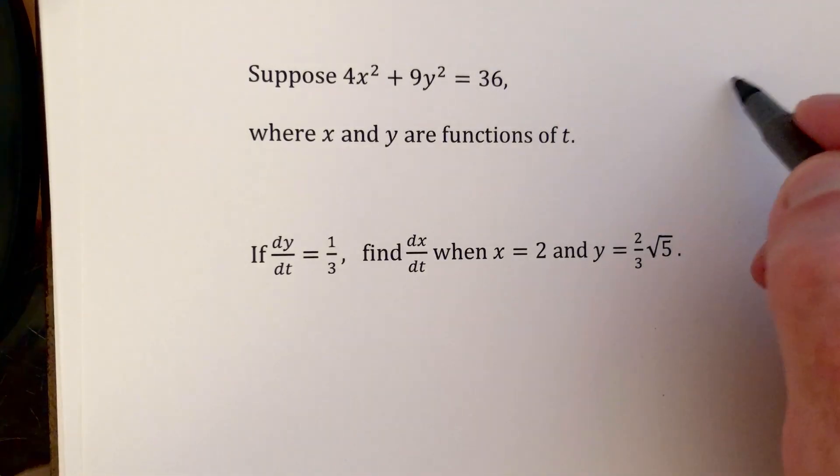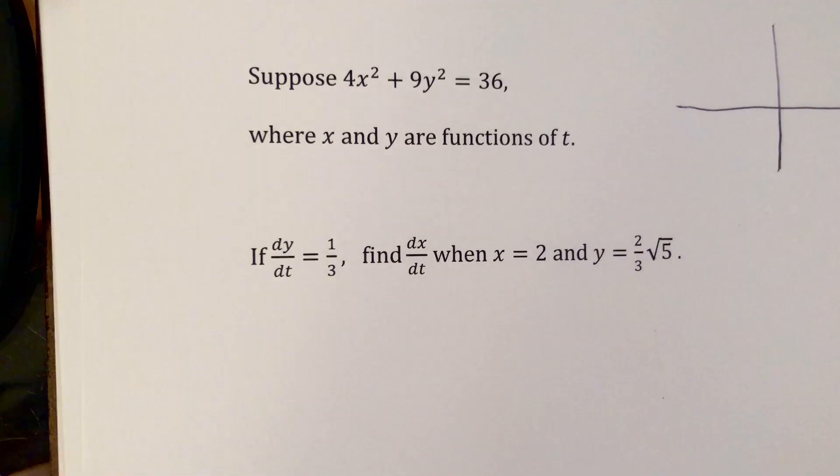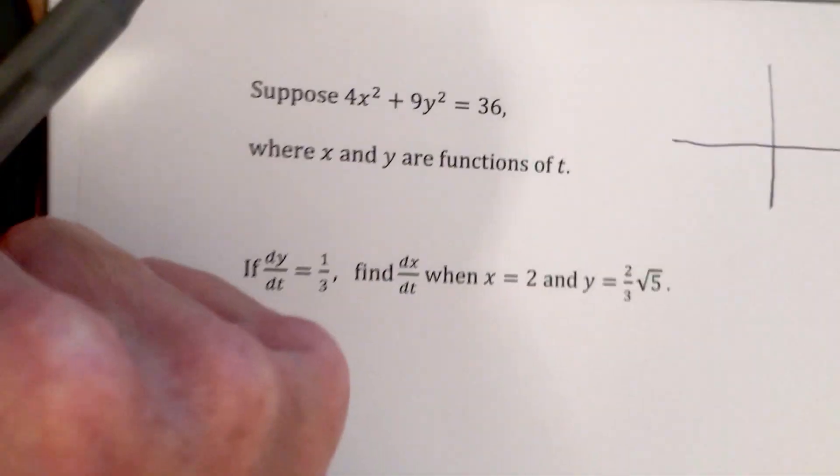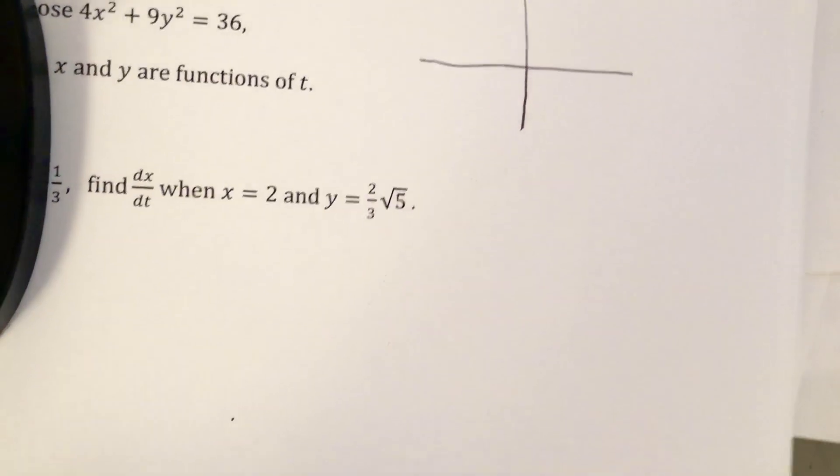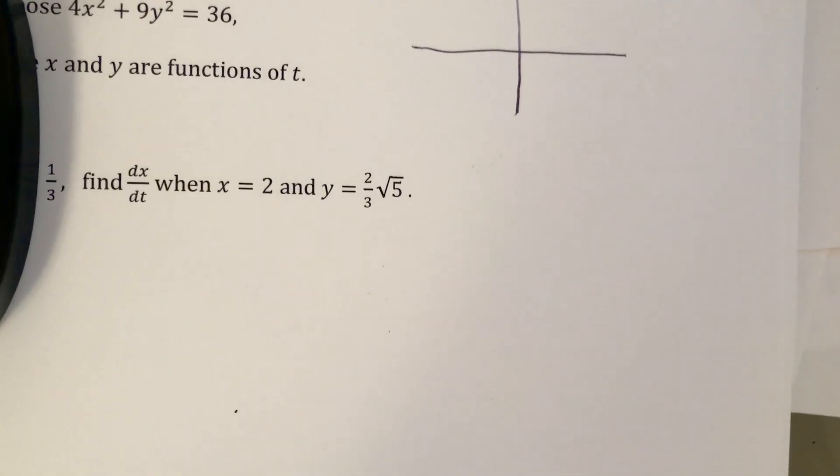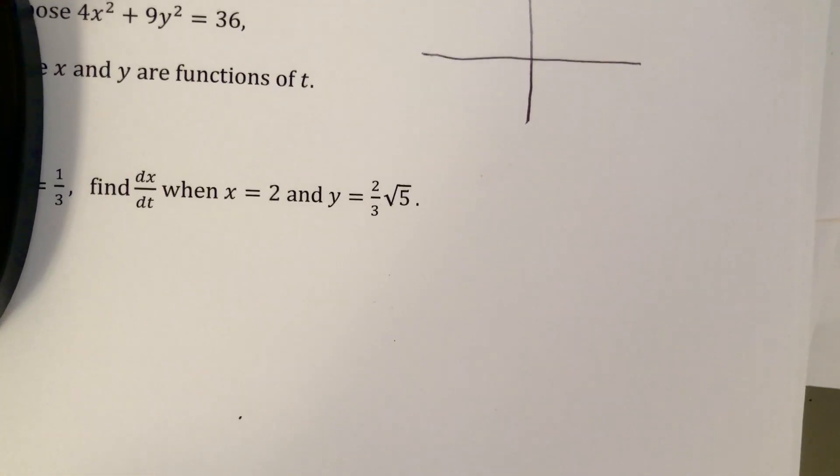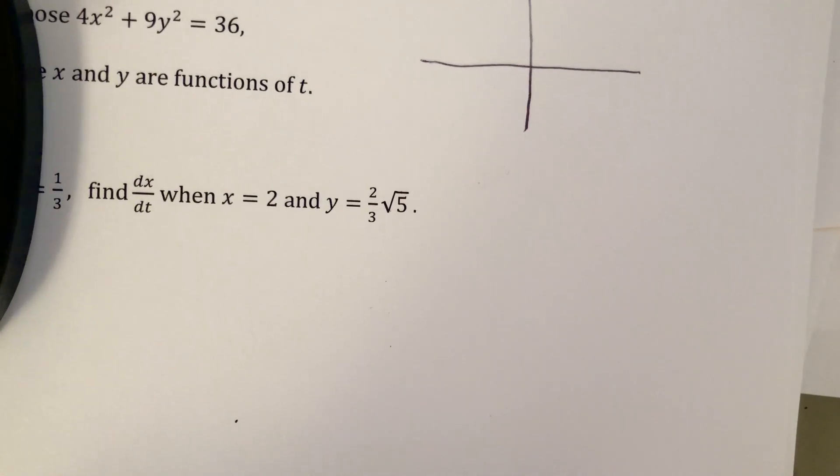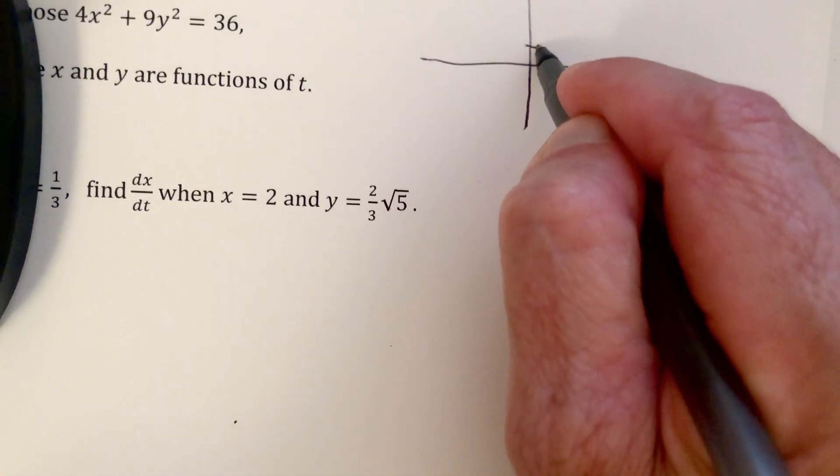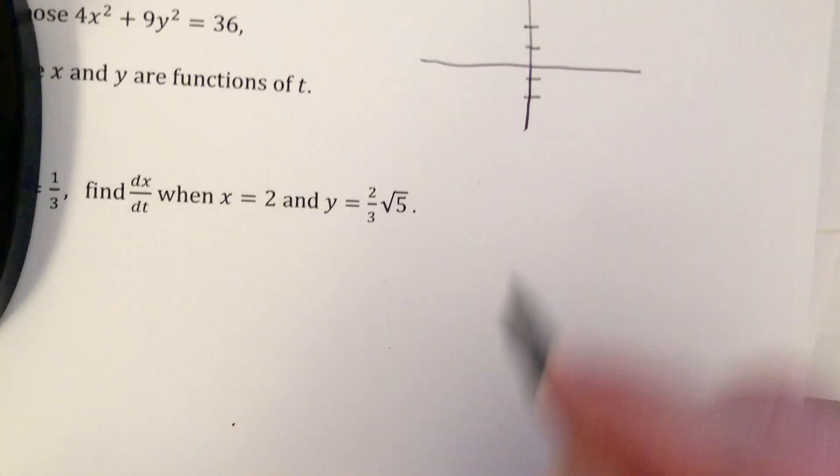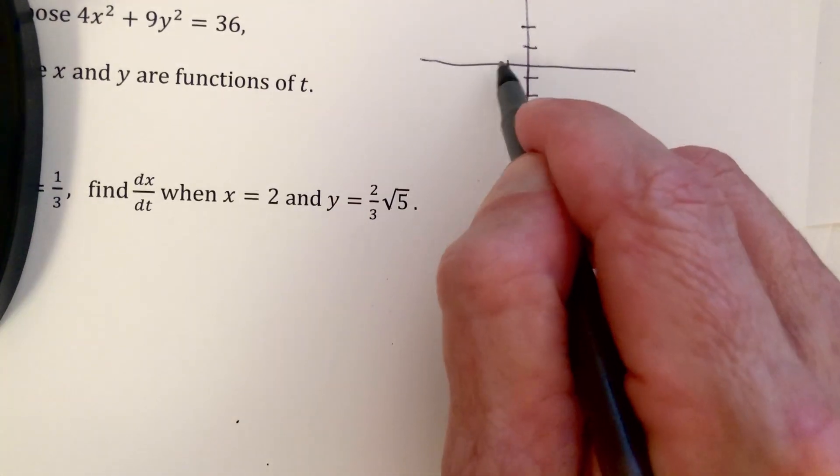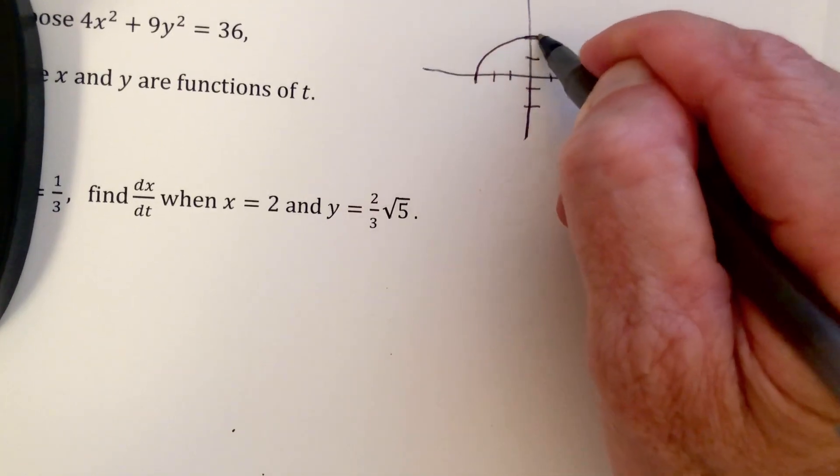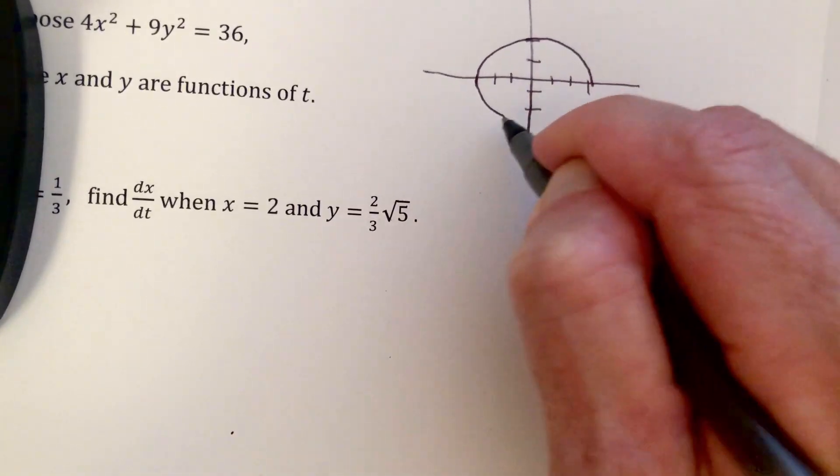So it may be helpful to draw a quick graph here. So 4x squared plus 9y squared equals 36. The graph doesn't need to be perfect. We can just use the x and y-intercepts. So the y-intercepts are plus or minus 2. The x-intercepts are plus or minus 3. We'll just draw a quick sketch. It doesn't have to be perfect. It's going to help us visualize what's going on.